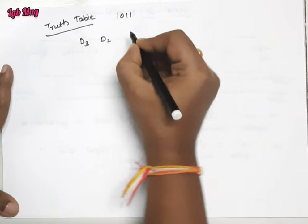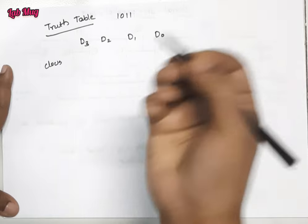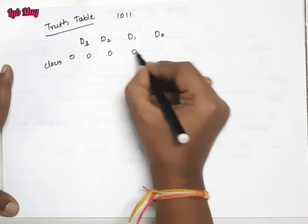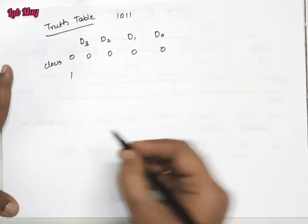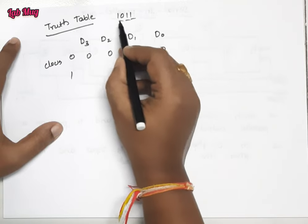I want to take 1011. First of all, we have D3 D2 D1 and D0 and the clock values. Whenever the clock value is 0 it is always 0.